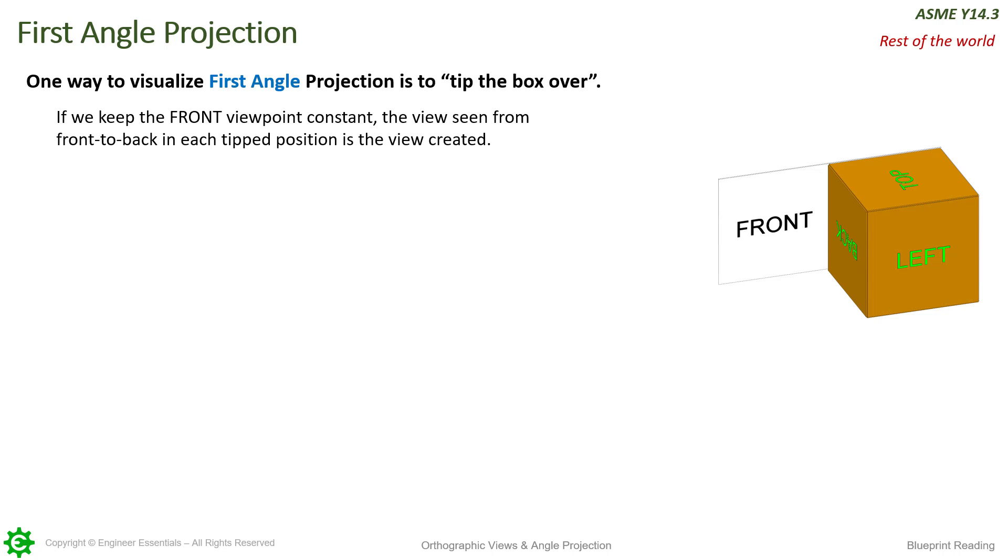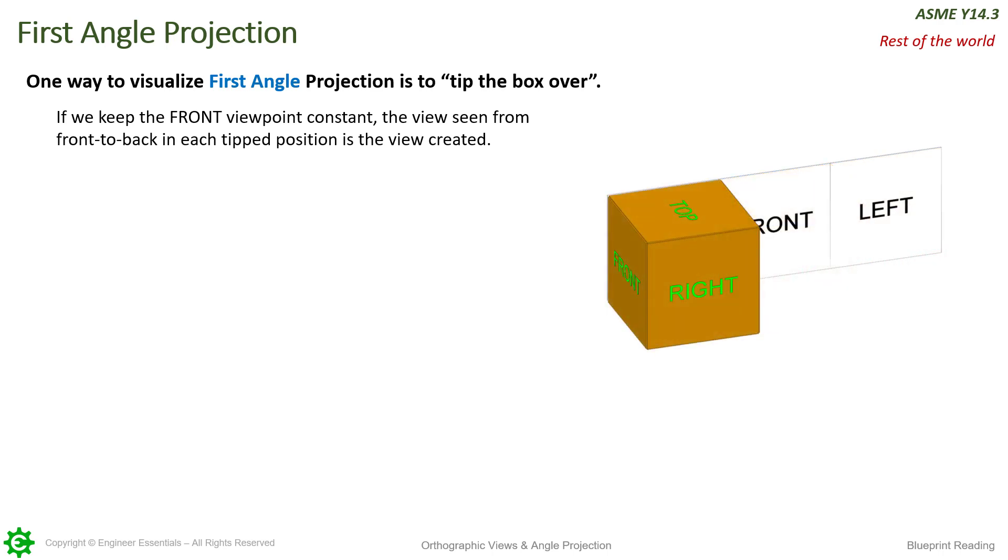That is the image that is to the right of the part. Same thing with the right view. If we tip it over again, that's where the right view will be. Remember our rule with first angle projection: the object is between the observer and the drawing itself. So here we're viewing the right view.